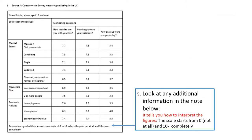Still, before you start looking at the figures, look at any additional information in the notes, usually at the bottom of the table. Here it tells you how to interpret the figures. The scale starts from 0, which refers to 'not at all', to 10, which refers to 'completely'. In other words, if somebody indicates something close to 10, the person is giving a high rating; if a person indicates something close to 0, he or she is giving a low rating.